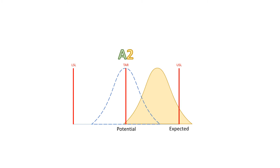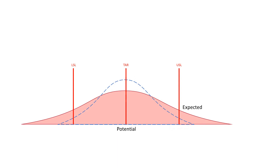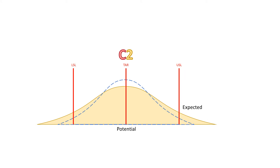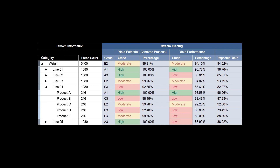This might be an opportunity for a quick win by simply retargeting the process. A C3 grade depicts a process that has low potential and even lower performance.